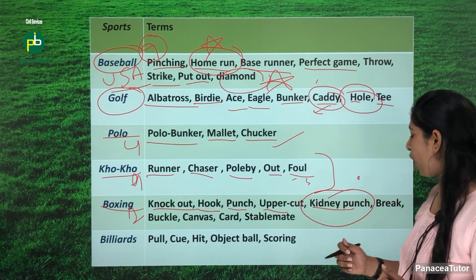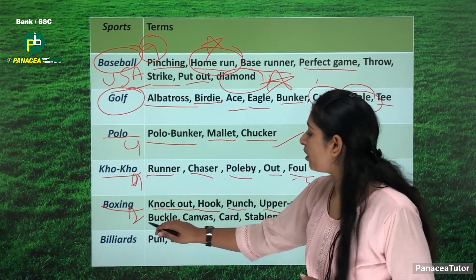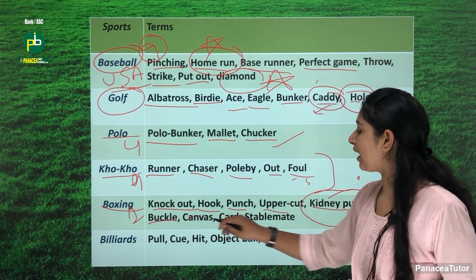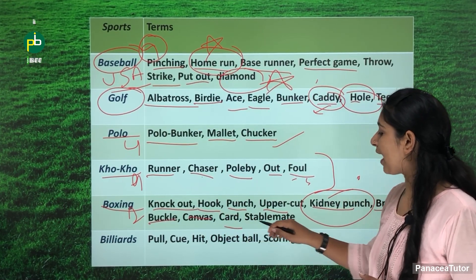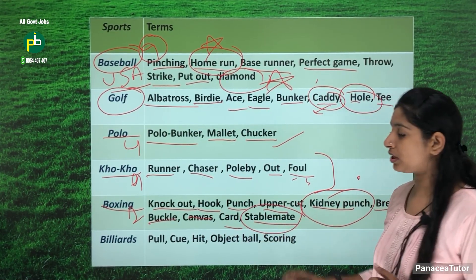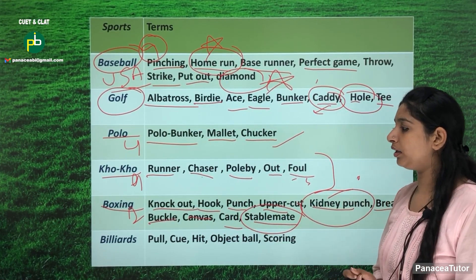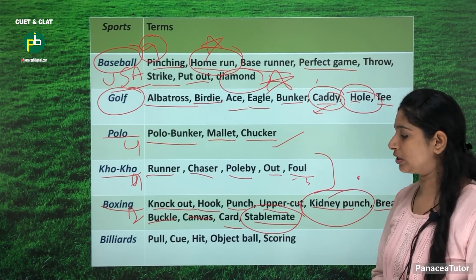Next are break, buckle, canvas, card and stablemate — these are all terms associated with boxing.